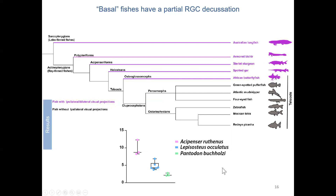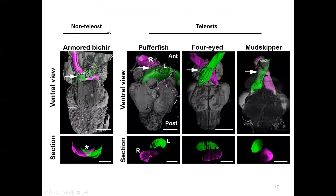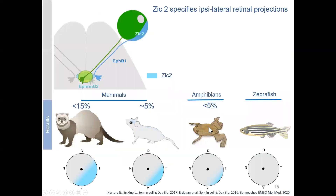Looking further, non-teleost fish appear to have an optic nerve that intermingles and crosses at a region resembling the mammalian optic chiasm. In a cross section of the 3D image, you can see the optic nerve crosses the optic chiasm, intermingles with the other optic nerve, and crosses the brain. By contrast, in teleost brains — the puffer fish, mudskipper, and another injected fish — the optic nerves simply go on top of each other. In cross section, these optic nerves are not intermingled and don't even intersect, providing further evidence that teleosts evolved to lose bilateral projections.